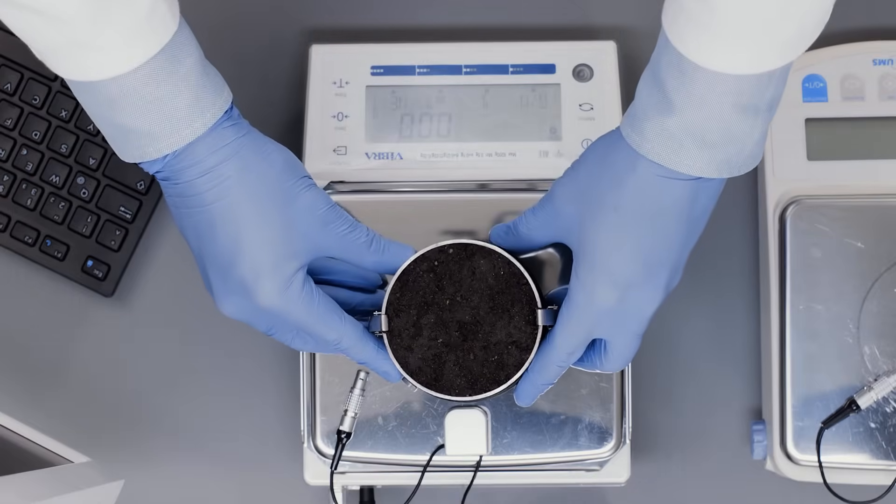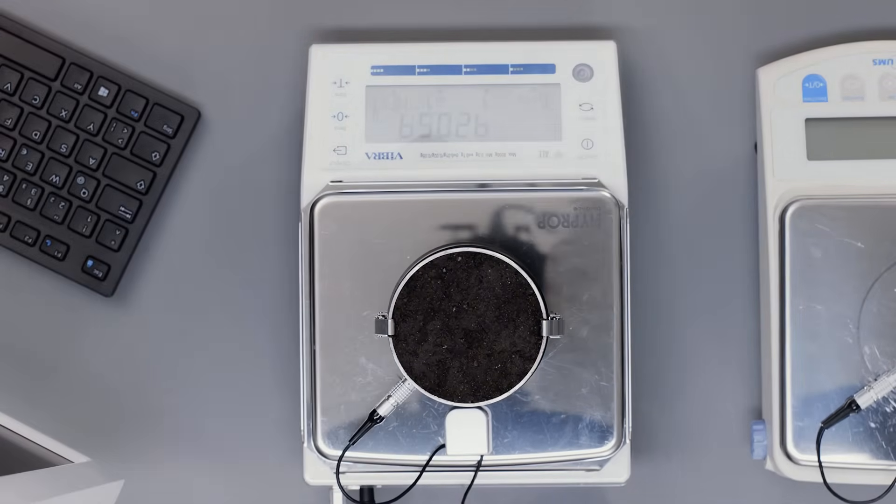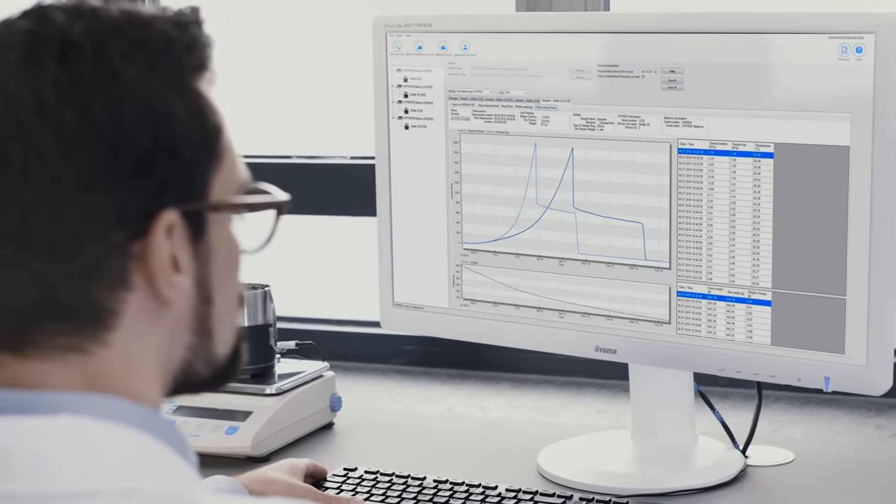Put it on the scale and connect the high prop. The high prop automatically delivers the unsaturated hydraulic conductivity and wet and moisture release curve.